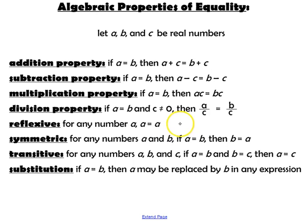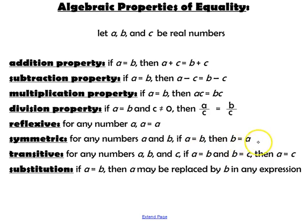The reflexive property states that for any number, that number is equal to itself. The symmetric property: for any two numbers, if A equals B, then B is also equal to A. The transitive property states that for any three numbers, if A equals B and B equals C, then A equals C.